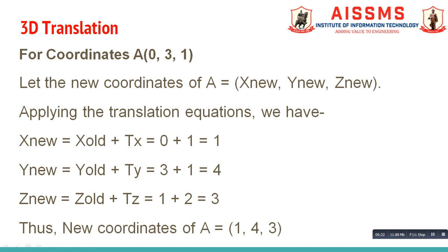Formula to calculate Y new is Y old plus TY. Here Y new is the Y coordinate of point A after translation, Y old is the Y coordinate before translation, and TY is the translation vector along the Y axis. Substituting the given values, Y new equals 4. Formula to calculate Z new is Z old plus TZ. Substituting the given values, Z new equals 3. Thus, new coordinates of point A are (1, 4, 3) after performing the translation operation.